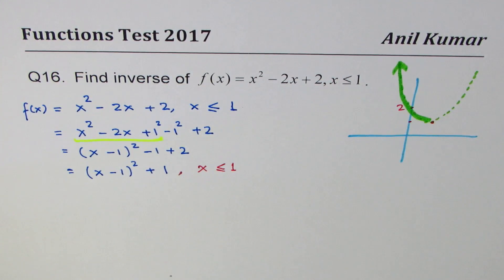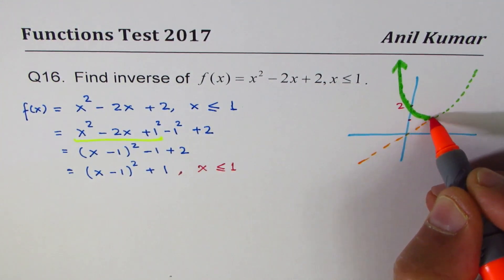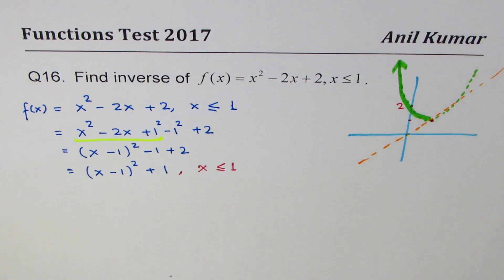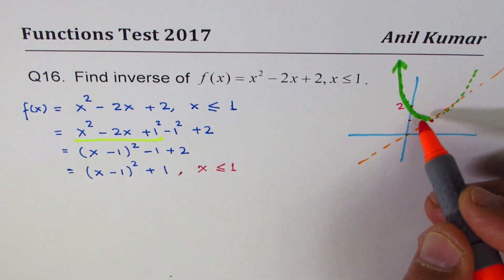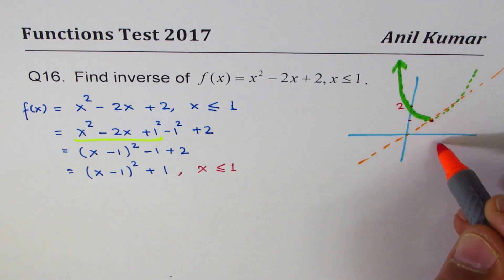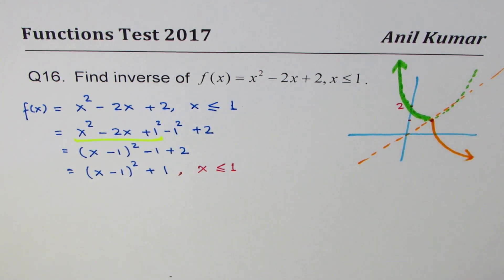When you try to find the inverse, you have to reflect the graph on y = x. What do you expect? You expect a square root function. Only one arm.